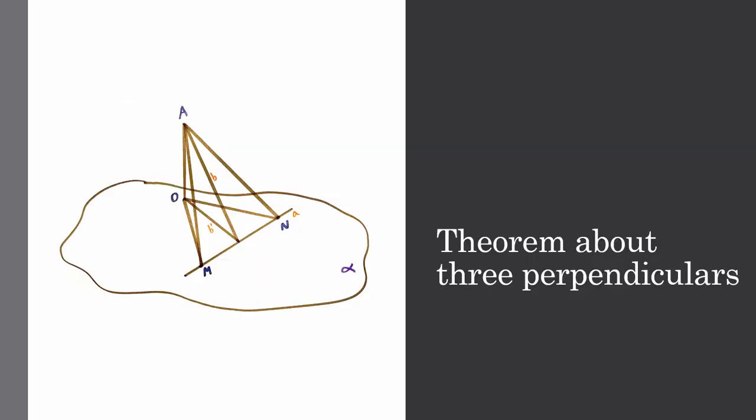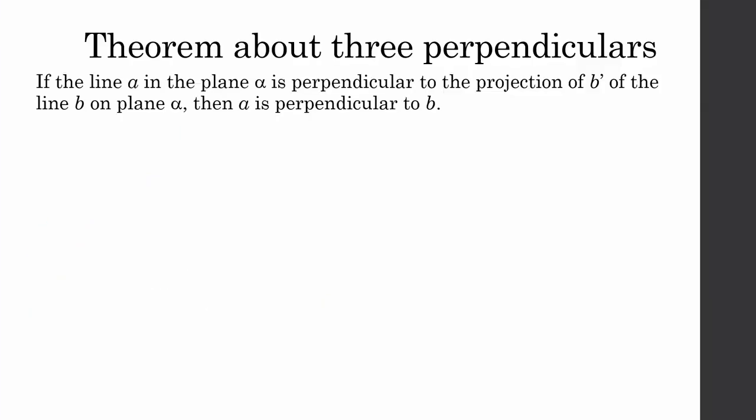First, I will prove the theorem about three perpendiculars. The theorem is as follows: if the line A in the plane alpha is perpendicular to the projection B' of the line B on plane alpha, then A is perpendicular to B.